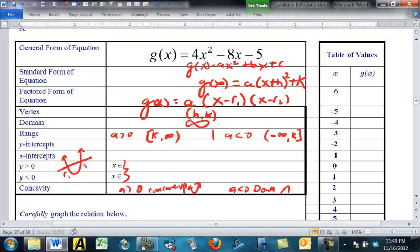and let's say root 1's on the left or root 2's on the right, then the Y will be positive when X goes from negative infinity up to root 1. And then also from root 2 to infinity, it will be negative when X is going between the two, root 1 to root 2.